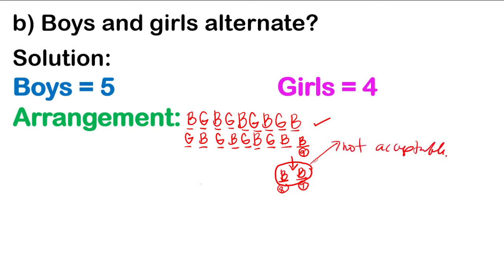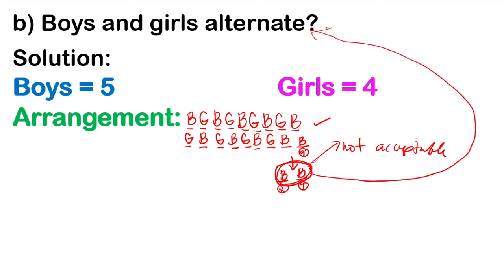Why is it not acceptable? Because in the remaining 2 seats, the two boys would end up sitting next to each other. It doesn't satisfy the condition that boys and girls must alternate. So we only have one acceptable arrangement, and we will now proceed with our solution.